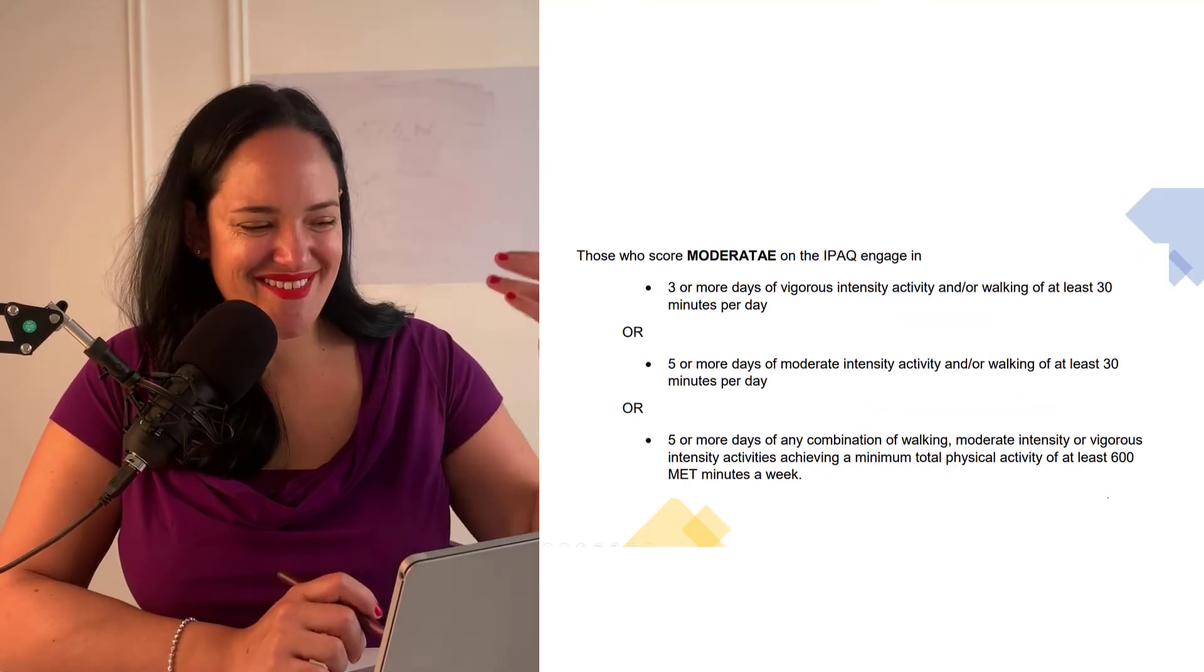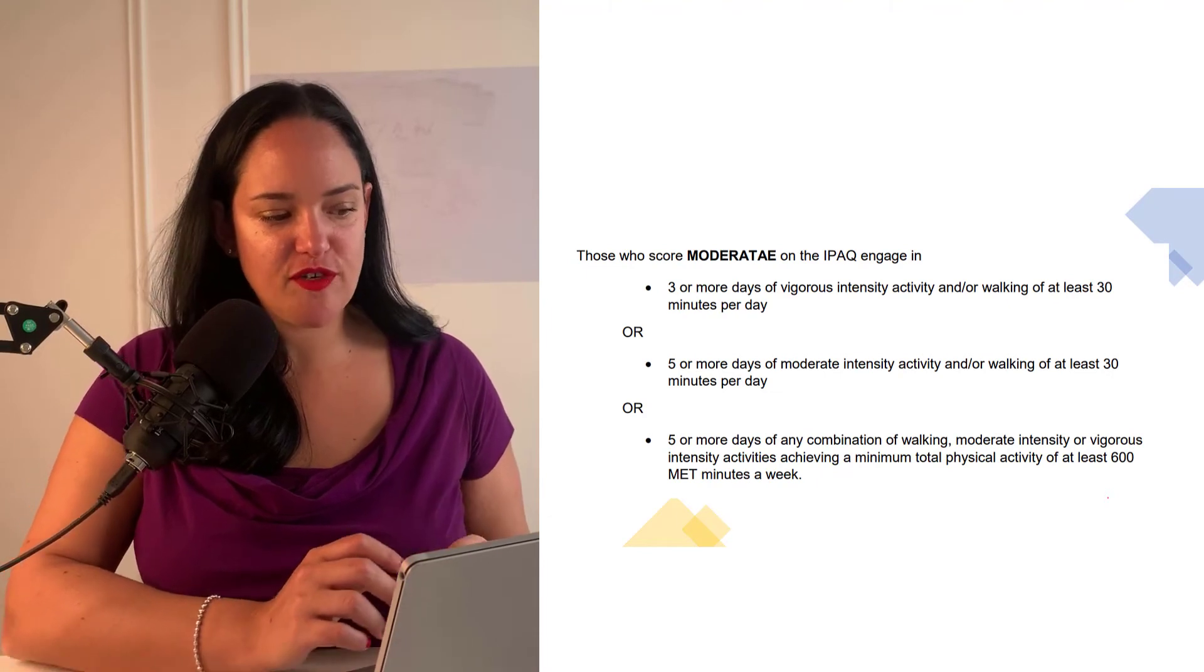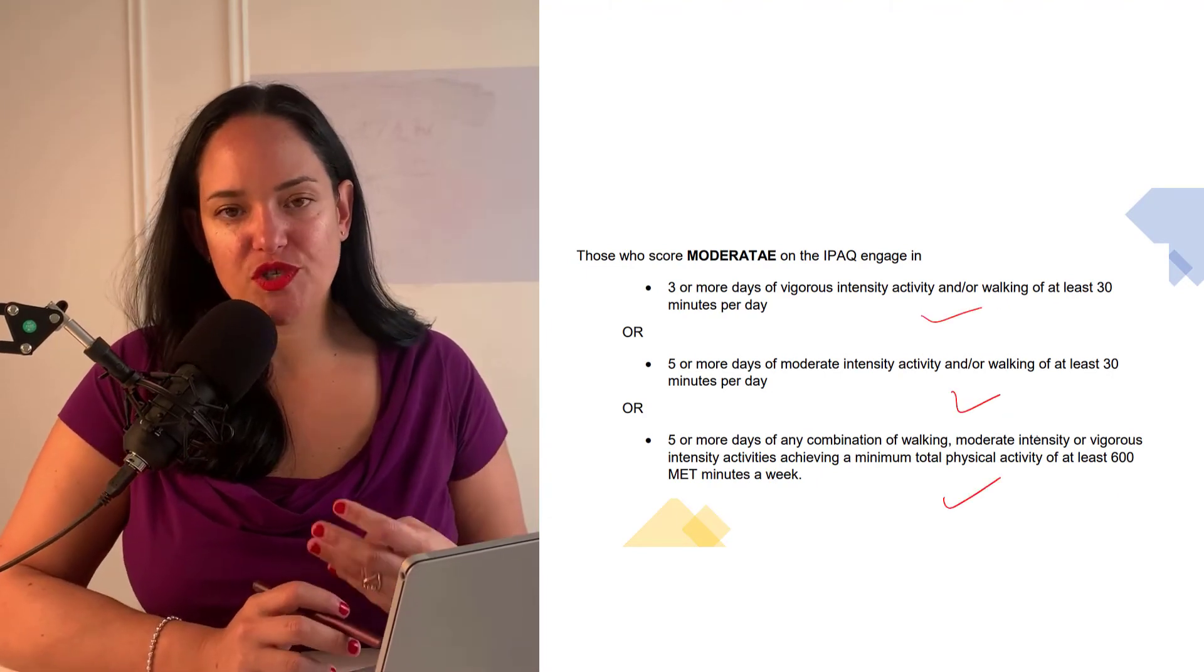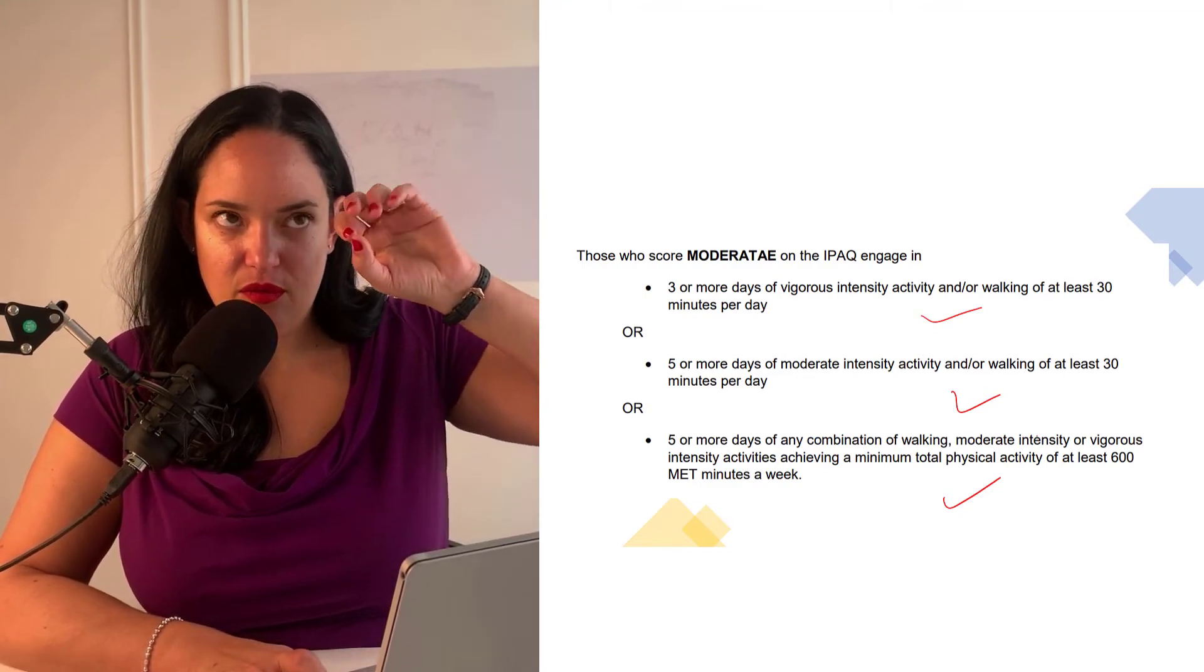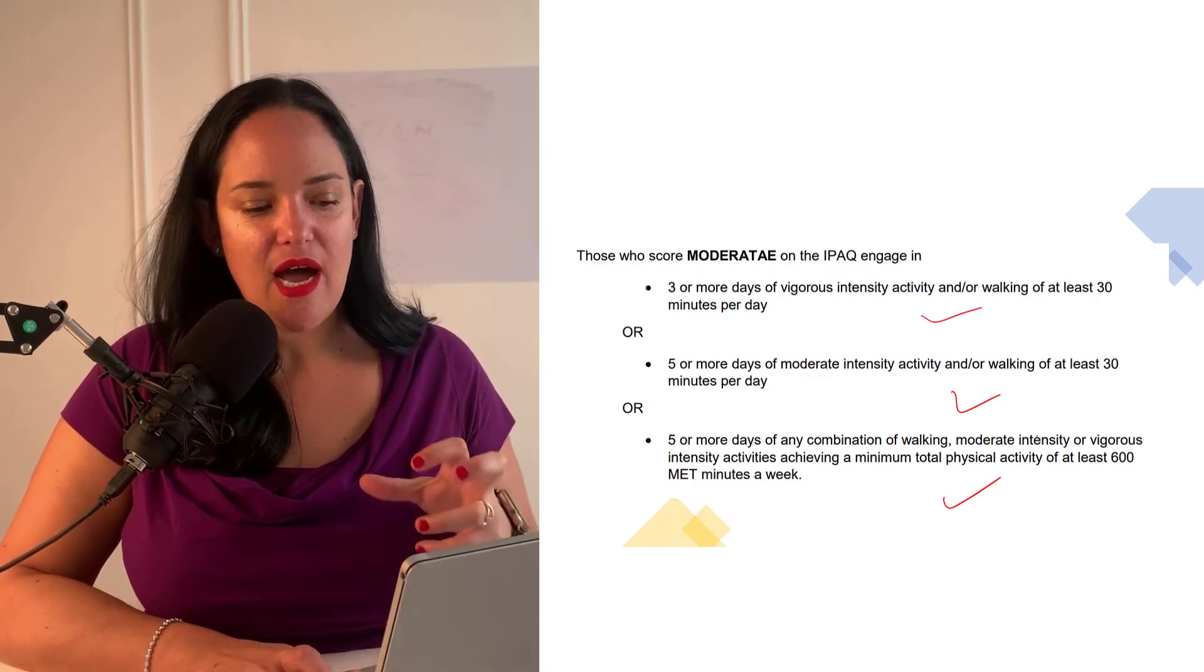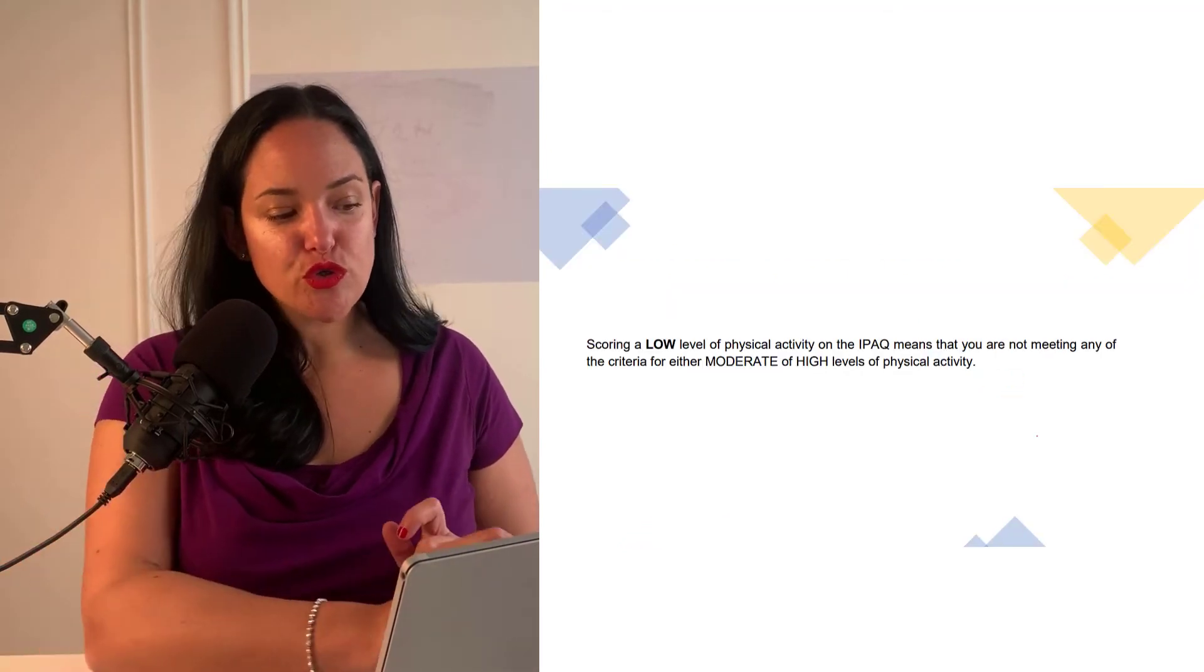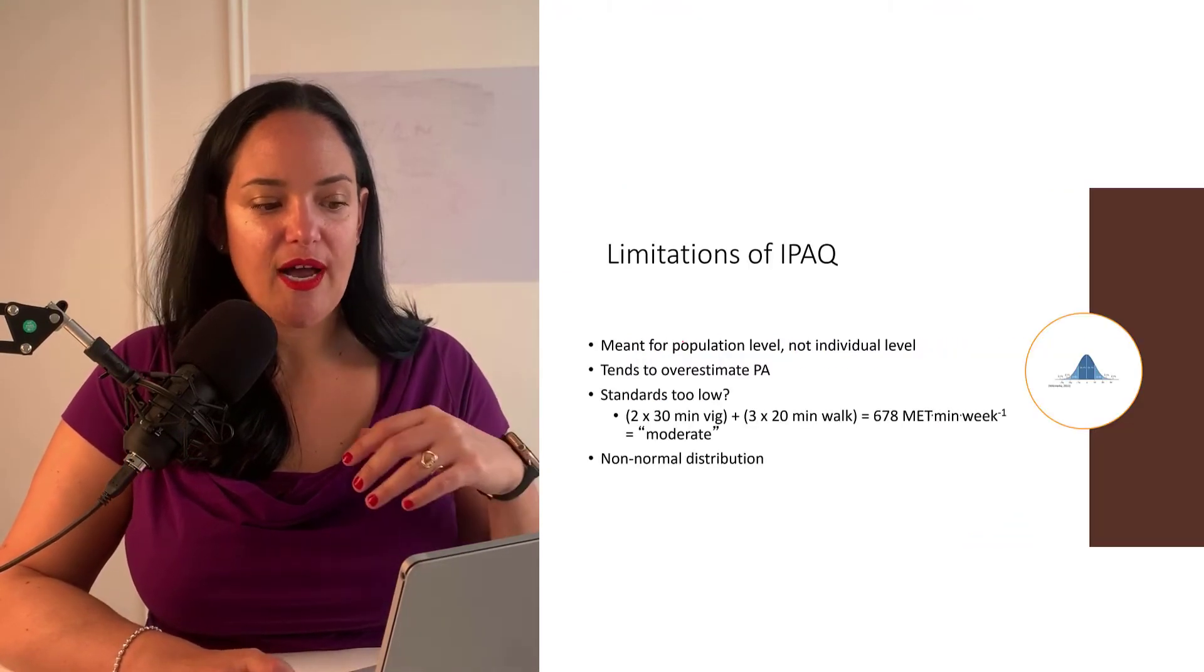And you can read what the calculation is to call someone moderate for physical activity, but there's kind of three different ways that we would score someone as moderate, depending on if they're saying how much vigorous moderate walking activities they're getting and the total amount of METs per week as well. And then someone would get a low score if they don't meet the criteria for moderate or high.